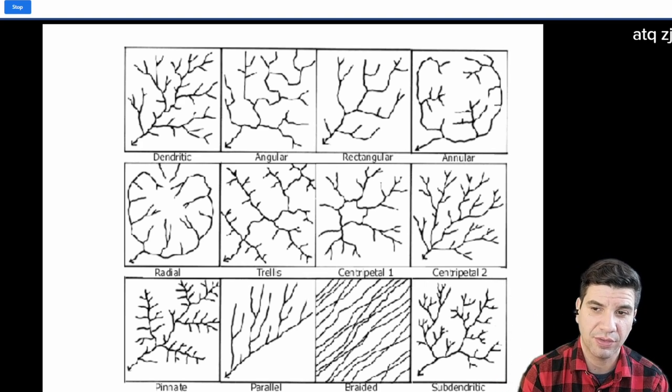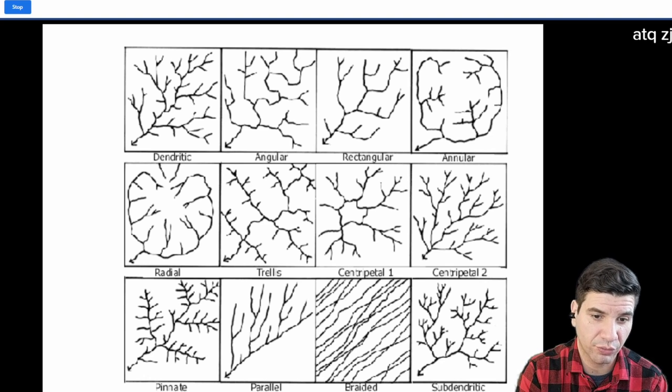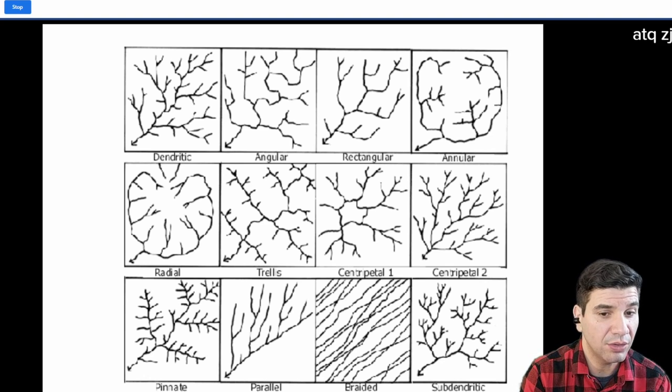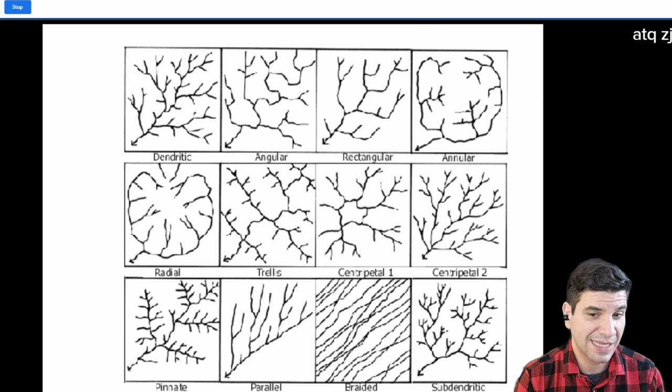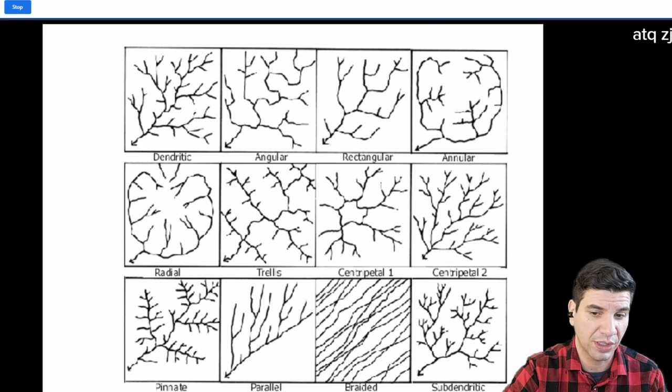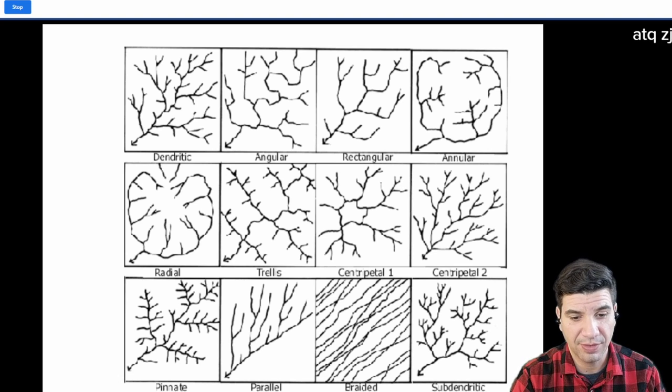Annular. We said that that's when the bedrock has a dome and it kind of rolls around it. Radial is when it rolls down the side of a mountain. And then trellis is when you have those rolling hills. That's basically it.